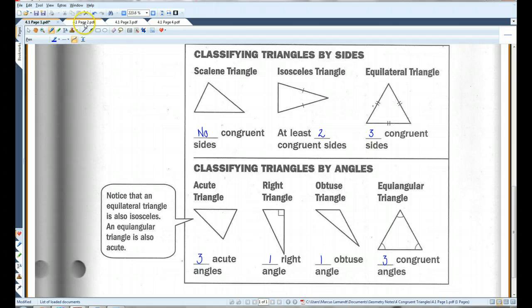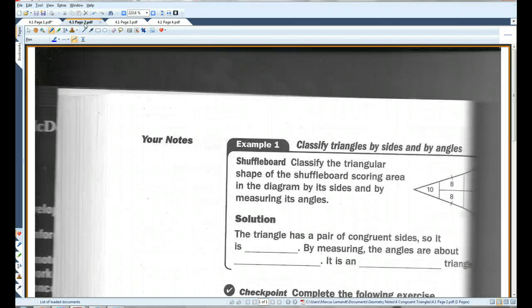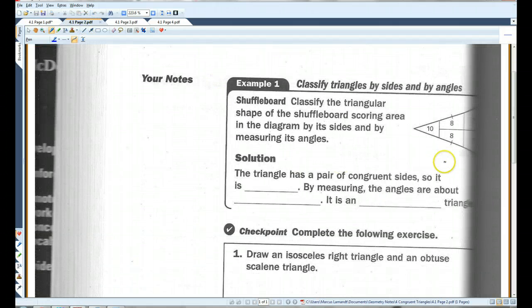Let's go on to page two. I apologize. The diagram got cut off. Let me see if I can draw in what's missing. This is a seven. This is a seven. Classify the triangular shape of the shuffleboard scoring area in the diagram by its sides and by measuring its angles. The triangle has a pair of congruent sides. Notice that this side is congruent to this side, as signified by this little dash.